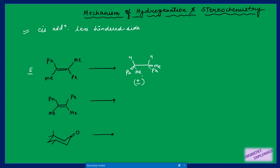But if we take the Z-alkene, we will get a meso-type product, because both phenyls go on the same side — either below the plane or above the plane. So with hydrogen over palladium catalyst, the Z-alkene gives the meso compound, while the E-alkene gives the racemic mixture.